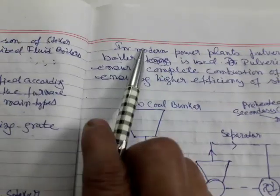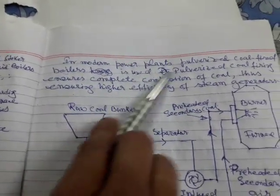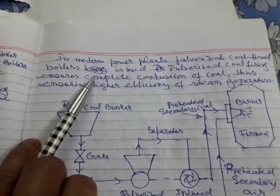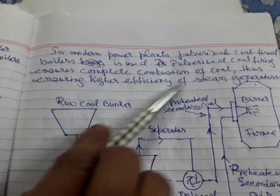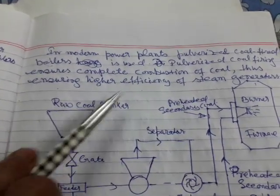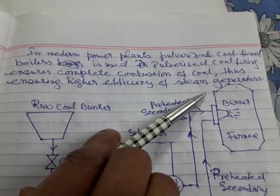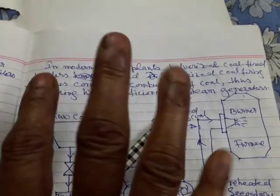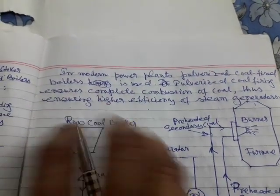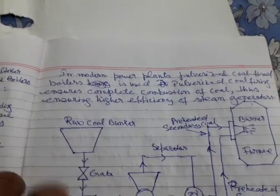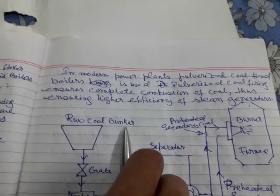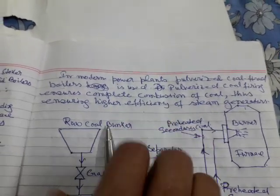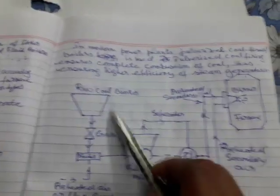In modern power plants, pulverized coal fired boilers are used. Pulverized coal firing ensures complete combustion of coal, thus ensuring higher efficiency of steam generation. When coal is pulverized, the surface area of the coal is remarkably increased, so we can get a greater amount of heat from the same amount of coal.